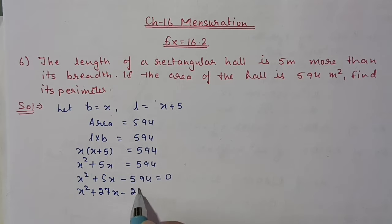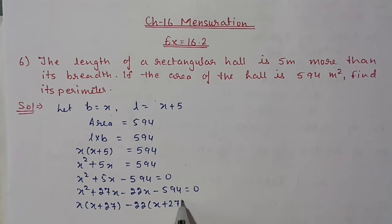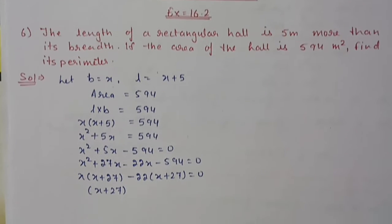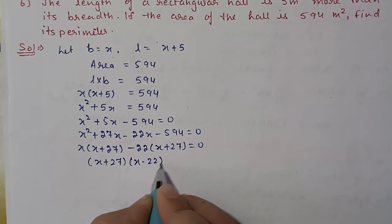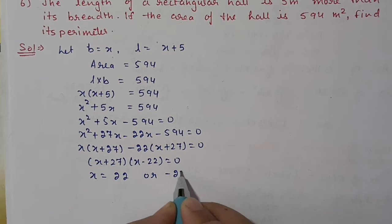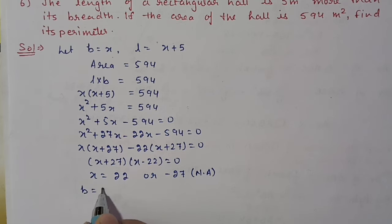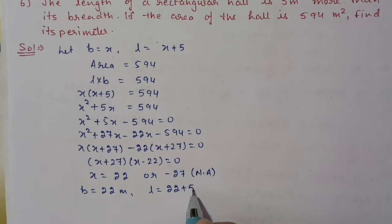We write x squared plus 27x minus 22x minus 594 equals 0. From the first two terms, x is taken as common, and from the last two terms, minus 22 is taken as common. We get (x plus 27)(x minus 22) equals 0, so x equals 22 or x equals minus 27. Minus 27 is not applicable because length cannot be negative, so x equals 22, meaning breadth is 22 meters and length is 22 plus 5 equals 27 meters.